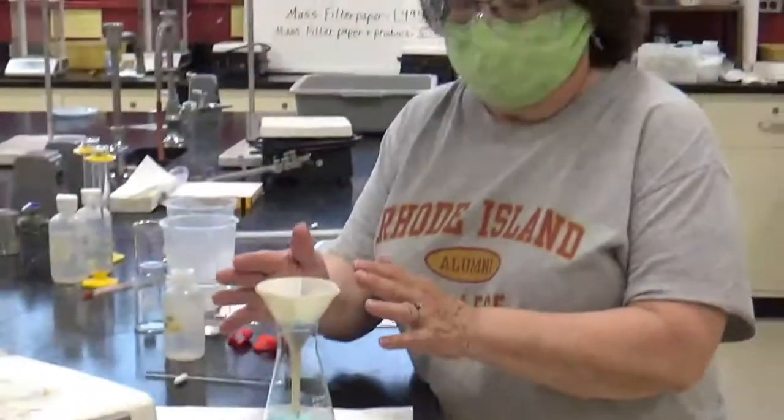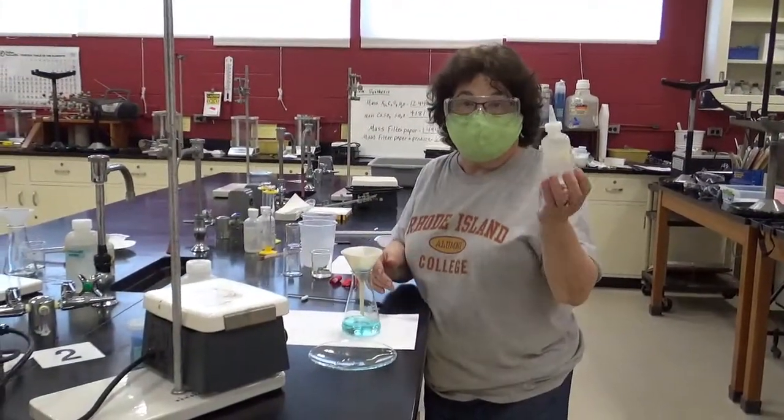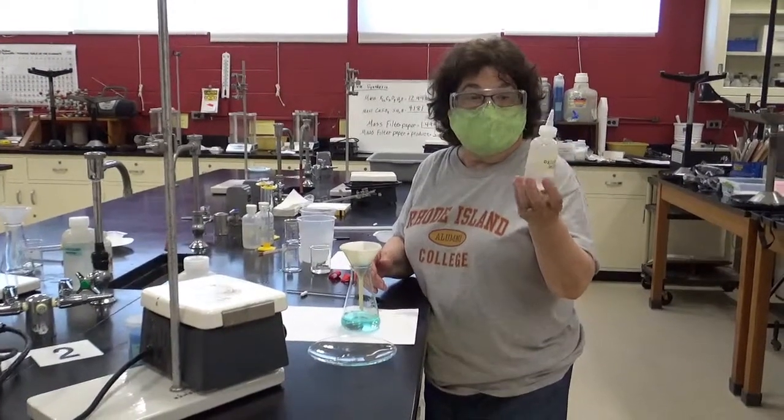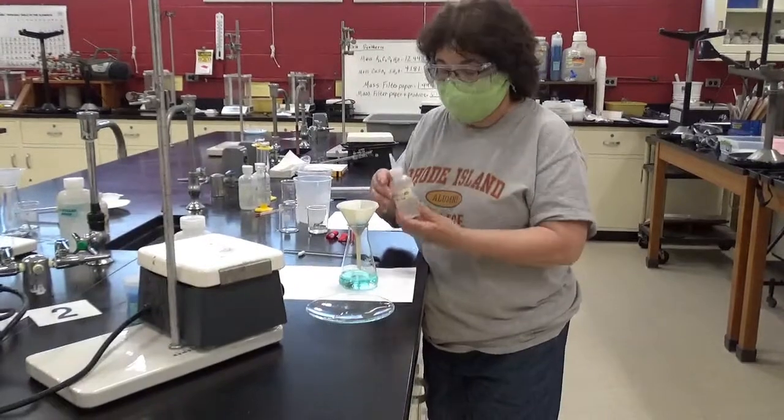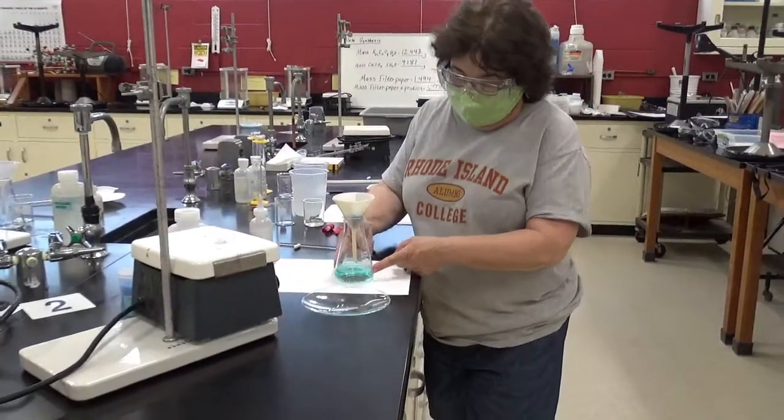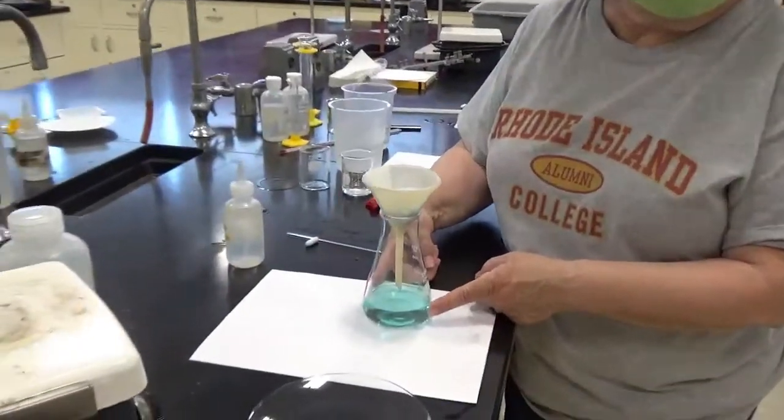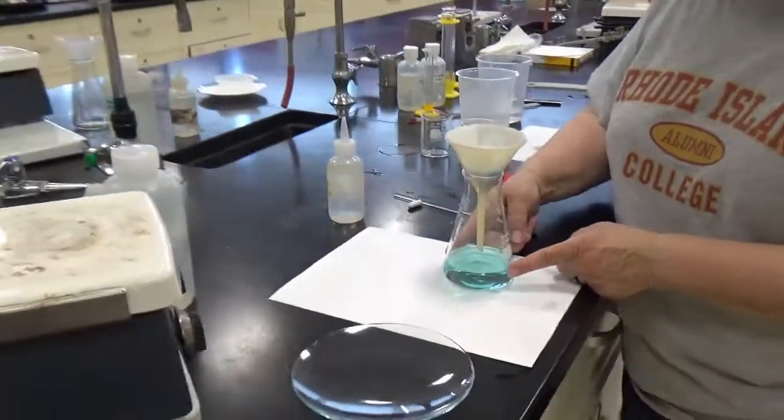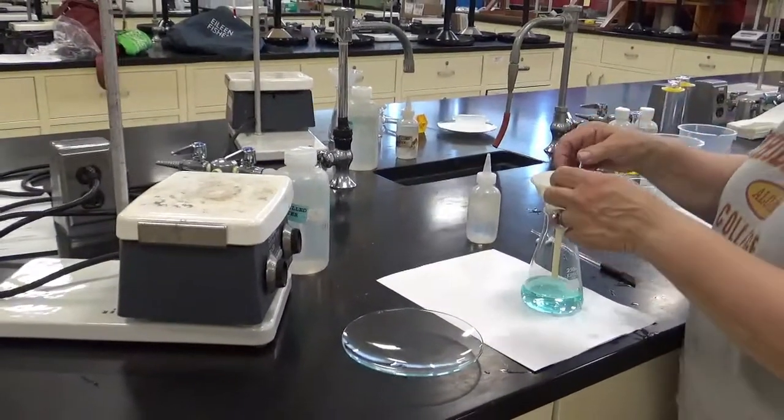Now we've got our filter paper with our product in it. We've rinsed it with some cold, very cold water. Why was it very cold? Why did it have to be cold? You can answer that question. I hope you made observations about the filtrate and what color it is. It started off clear, now it's got that little bluish tinge to it. Why? We'll think about that.